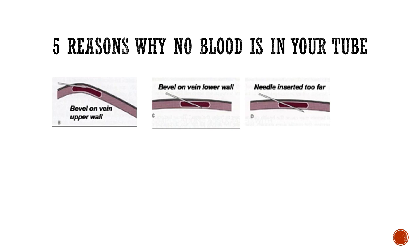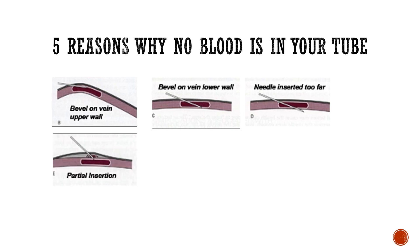Another issue is that the needle is inserted too far — you've gone through the vein. Instead of just getting the bevel in, you put half or most of the needle in and went through the other side. The solution here is to draw back on the needle slightly and slowly until you see blood flow into the tube. Do not manipulate the needle — just retract and wait. Once you see blood flowing, stop and allow the tube to fill. Proper angle, bevel up, but retract slowly to restore blood flow.